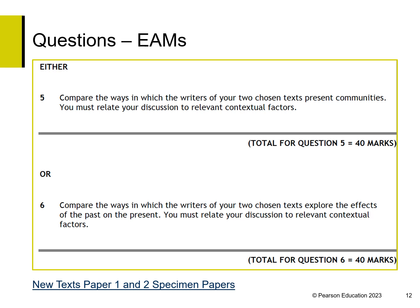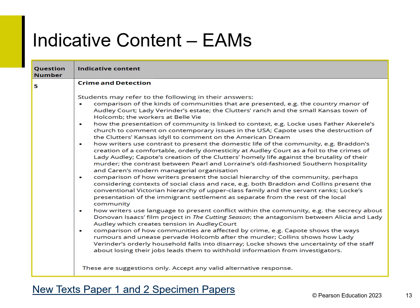Here is another set of questions from the EAMS, or specimen papers, which can be found by following the link at the bottom of this slide. Students have the choice between comparing the ways the writers of their chosen texts present communities, or explore the effects of the past on the present. Here is the indicative content for the question about the ways the writers present communities. You may want to pause this recording and read the indicative content and make a note of how it incorporates the four assessment objectives.